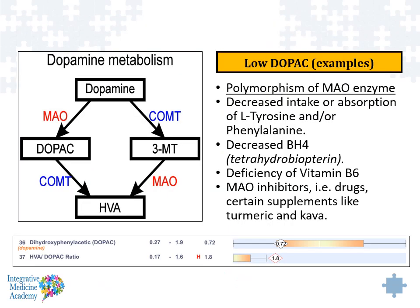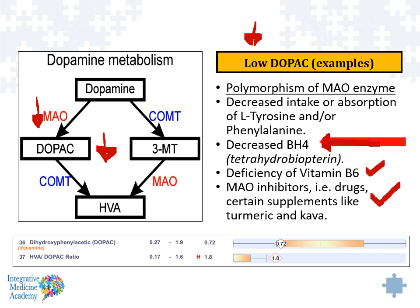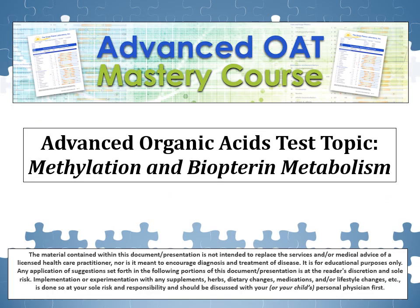Causes of low DOPAC can include decreased intake or absorption of tyrosine or phenylalanine, the precursors to dopamine. A deficiency of B6, monoamine oxidase inhibitors, certain drugs and certain supplements could also cause low DOPAC. Things that cause a downregulation of MAOA — a mutation that causes MAOA to slow down — could decrease DOPAC levels. One interesting cause is a deficiency of BH4, tetrahydrobiopterin, which is discussed in more detail in a separate video titled Methylation and Biopterin Metabolism.